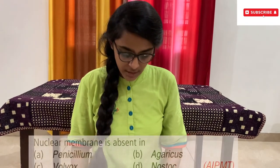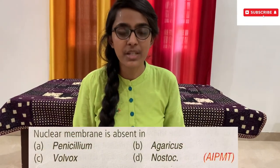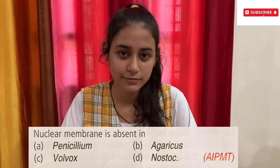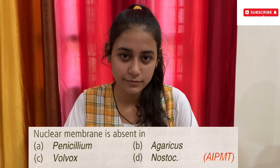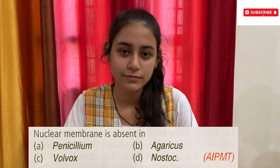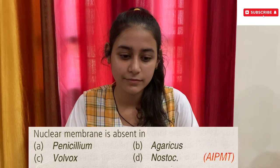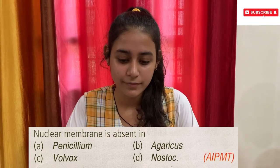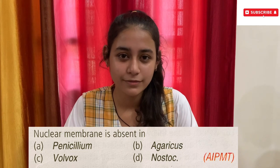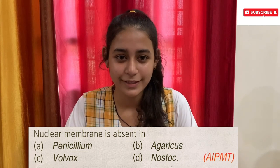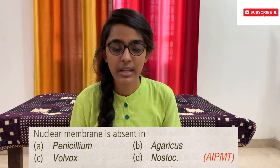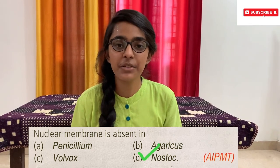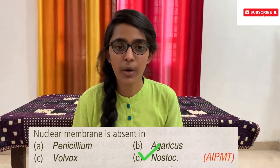The next question goes to Simran. Nuclear membrane is absent in — options: A) Penicillium, B) Agaricus, C) Volvox, D) Nostoc. Option D, Nostoc. Are you sure? Yes ma'am. Option D, Nostoc, is the correct answer. Give her a huge round of applause!